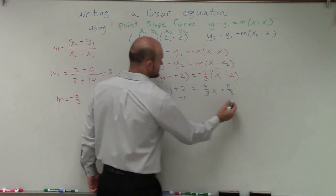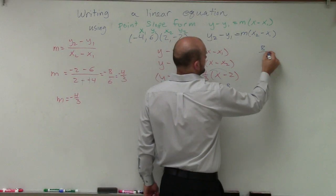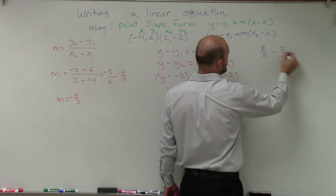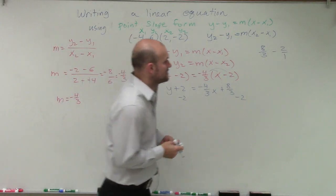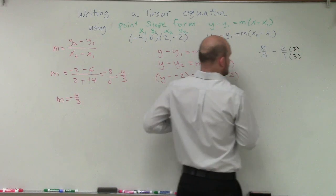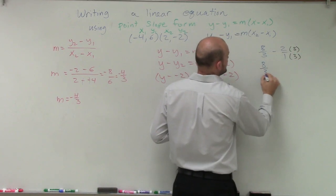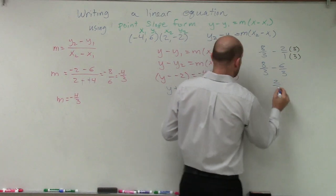Now I'm going to subtract 2 on both sides. So now I have 8 thirds minus 2, and I'm going to change that to 2 over 1 because now I've got to combine them by getting the same denominators. So to get the same denominators, I need to multiply by 3 over 3. So therefore, I have 8 thirds minus 6 thirds, which equals 2 thirds.